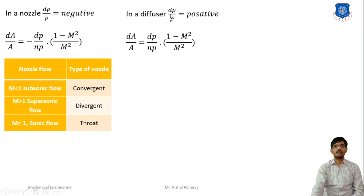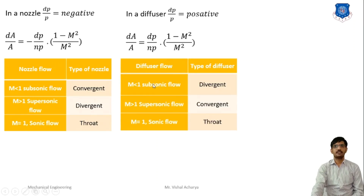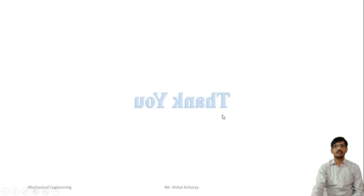For a diffuser, delta P/P is positive. When M is less than 1 (subsonic diffuser), positive times positive means area increases — divergent shape. When M is greater than 1, negative times positive gives negative delta A, so area decreases — convergent shape. When M equals 1, the diffuser throat area is also constant. This concludes the relationship between area, velocity, and pressure in nozzle flow.